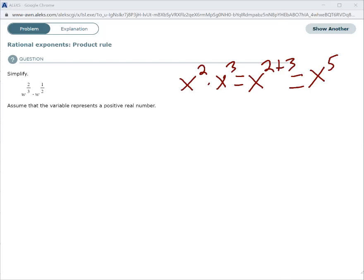Now, the only difference here is our exponents are fractions, so we're going to have to use our adding fractions together. So w to the two thirds power times w to the one half power, that's going to be the same as w to the two thirds plus one half power.